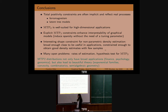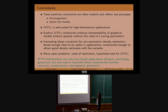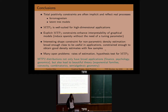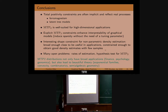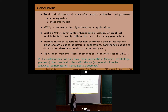I think it is useful to make these MTP2 constraints explicit because they give you so many nice properties when estimating graphical models. They induce sparsity without the need of a tuning parameter, you can apply them in the high-dimensional setting, and they might also be interesting constraints in the non-parametric setting for density estimation. They may be broad enough to be useful in applications and constrained enough to get good density estimates with very few samples.